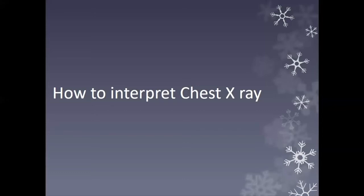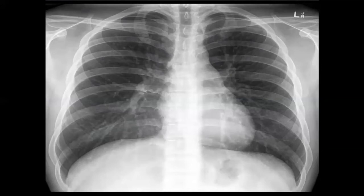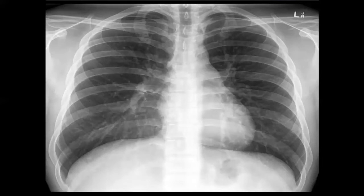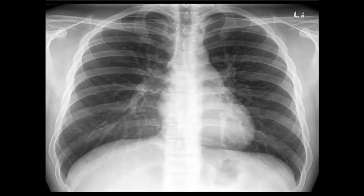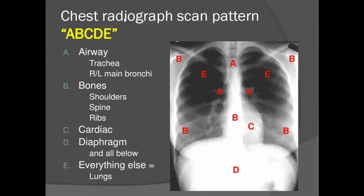Now, how to interpret a chest X-ray. First, confirm your patient's name, date of birth, and hospital number — and make sure this is the X-ray ordered on the correct date and time. Then use an organized ABCDE approach. A stands for airway — that is the trachea. Check that the trachea is centralized, and check the right and left main bronchus and carina.